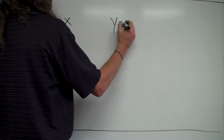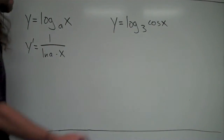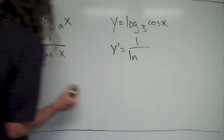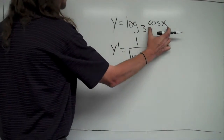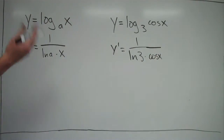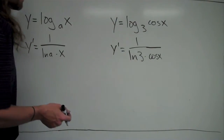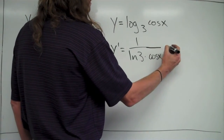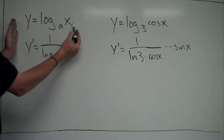Now let's say you had y equals log base 3 of cosine x. In this case, the inner function is not just x, but it's still going to start off the same way. It's going to be 1 over natural log of 3 — that's the a — times cosine x, since that's where x appears. But since the inner function is not just x, I have to use the chain rule and multiply by the derivative of the inner function. The derivative of cosine x is negative sine x. A common mistake is putting that on the bottom, but I actually have to multiply the whole thing by negative sine x. The derivative of plain x is just 1, which is why no chain rule was needed before.